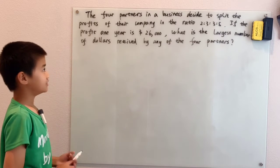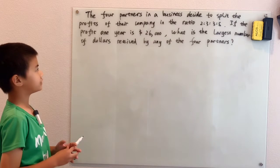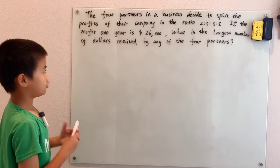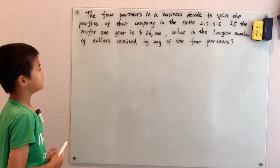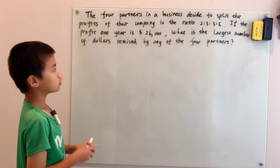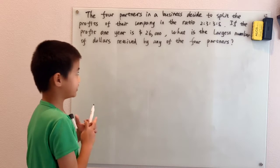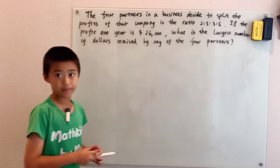The four partners in a business decide to split the profits of their company in the ratio 2 to 3 to 3 to 5. If the profit one year is $26,000, what is the largest number of dollars received by any of the four partners?